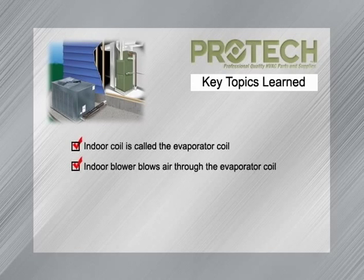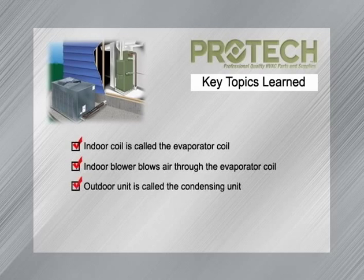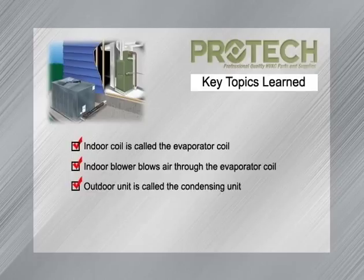We learned that the evaporator coil is connected to an outdoor unit called a condensing unit. The outdoor condensing unit has a special coil called a condenser coil, which rejects heat to the cooler outdoor air. It also has a special fan called a condenser fan that moves outdoor air across the hot condenser coil, as well as a pump called a compressor.